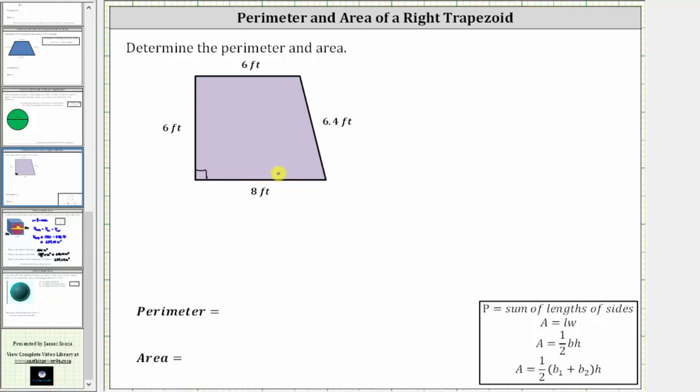To find the perimeter, we can think of walking around the outside of the trapezoid. Therefore, the perimeter is equal to 8 feet plus 6 feet plus 6 feet plus 6.4 feet.